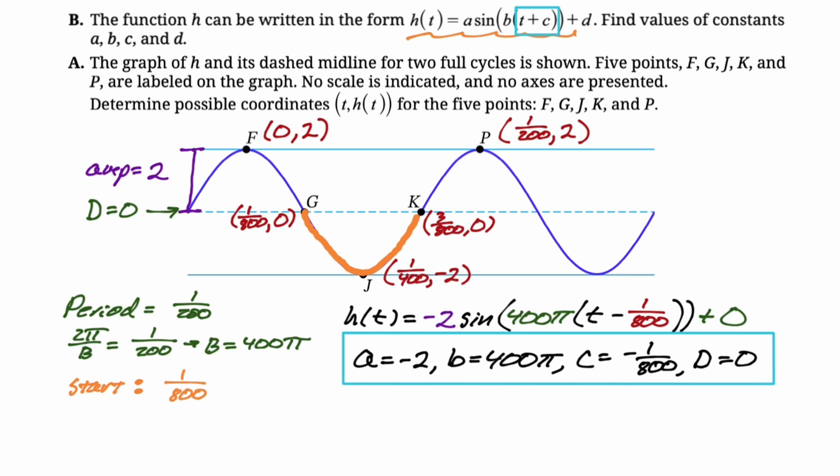I'm not going to do the whole problem, but you could totally have started at three over 800 and gotten a positive sine graph, and if you did that, your values would just be two, 400 pi, c. So it changed from negative to positive two, and it changes from c is negative one over 800 to c is negative three over 800. Everything else is the same. I think they'll accept either of those, because either of those goes through all those points. Now the next two parts are always the same.